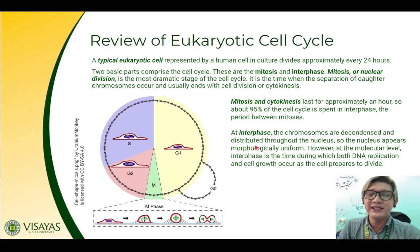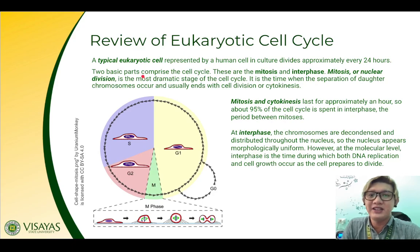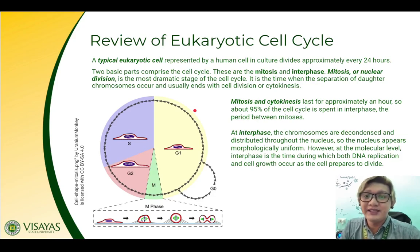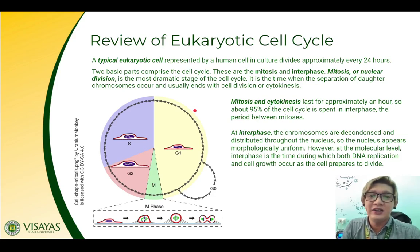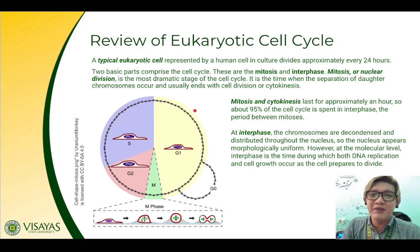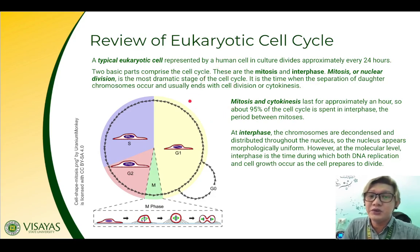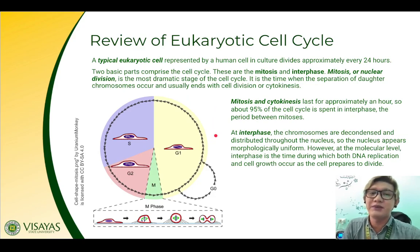Let us have a brief review of a eukaryotic cell cycle. A typical eukaryotic cell, represented by a human cell culture, divides approximately every 24 hours. There are two basic parts comprising the cell cycle: mitosis and interphase. Mitosis, or nuclear division, is the most dramatic stage of the cell cycle — it is the time when the separation of the daughter chromosomes occurs and usually ends with cytokinesis, or the division of the cytoplasm.